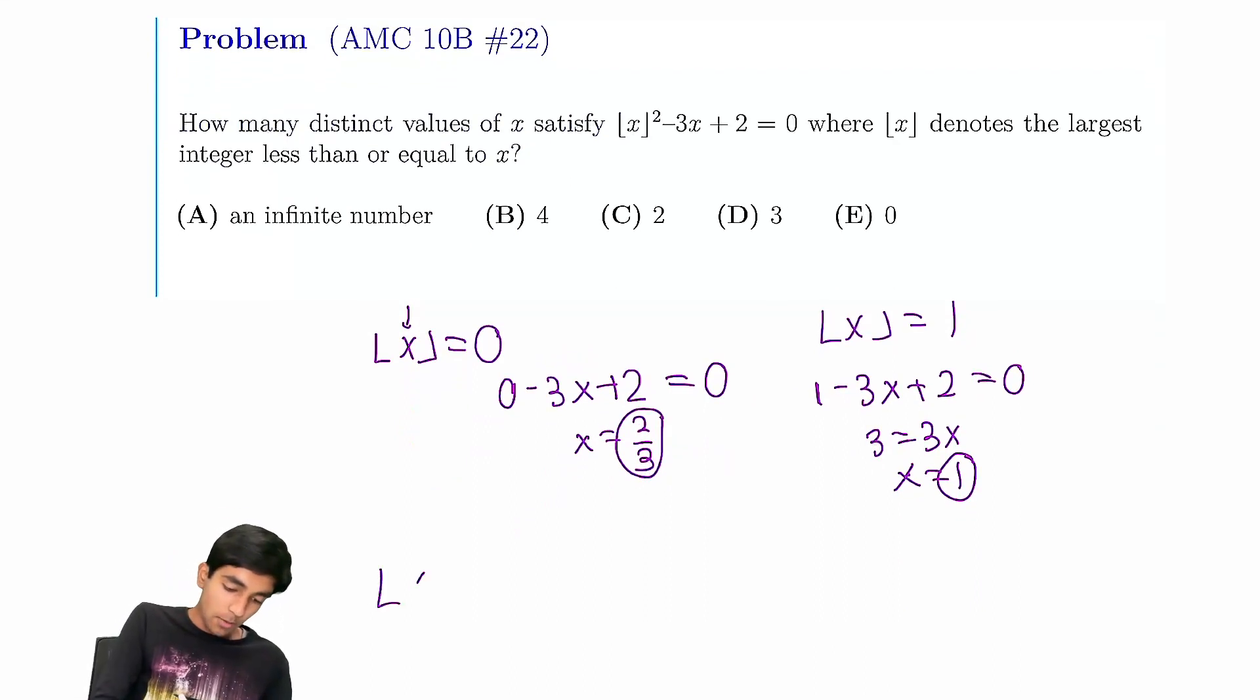And then for 2, it's very similar. The reason this works, the reason it's just integers, is because if you look at this quadratic ignoring the floors, we get the roots are 2 and 1. Notice that there's no other possibilities, because if x is like even 1.5, then this equation is not true.